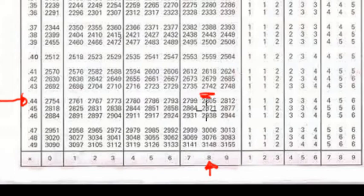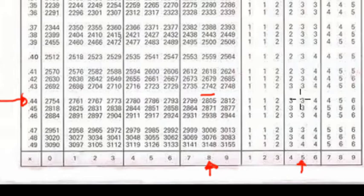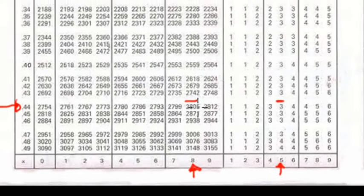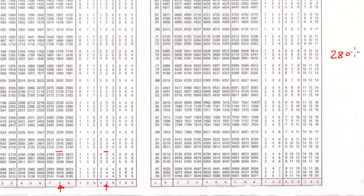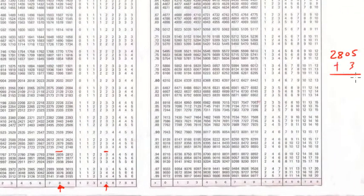Come up here — this is the number: 2, 8, 0, 5. This is 44 under 8. Difference of 5 — you come to the difference table, take 5, then go up to that line 44. So the number will be 2, 8, 0, 5 plus 3. We'll add this: 5 plus 3 is 8. This will be 2, 8, 0, 8.